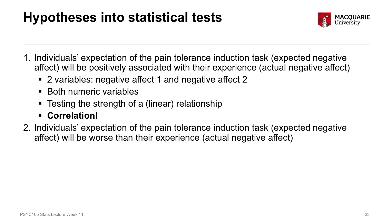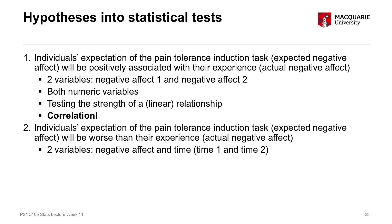Hypothesis two is that individuals' expectation of the pain tolerance induction task — their expected negative affect — will be worse than their actual experienced negative affect. This is a similar situation to hypothesis one in terms of the variables involved, but conceptually we're thinking about these variables differently. For hypothesis two, we have a single negative affect variable measured across two different time points: time one and time two.